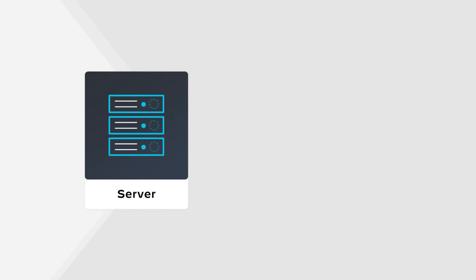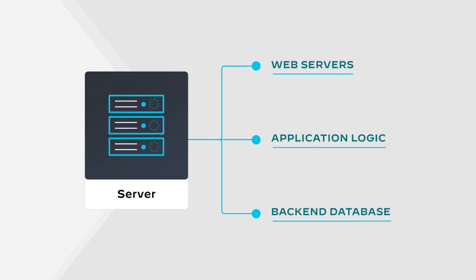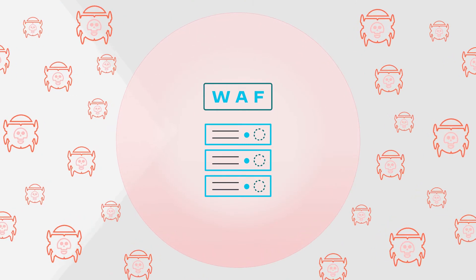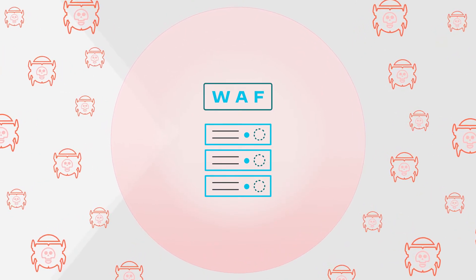In the past, web applications were hosted on one physical server. The server was usually placed in your private data center within your network. All of the components of the web application — the web server, the application logic, and the backend database — were all in one place. So the perimeter of your web application was very well defined; it was just the traffic to and from that server that you had to monitor and inspect. This made it easy to place a web app firewall in front of your server to protect against web-based attacks.